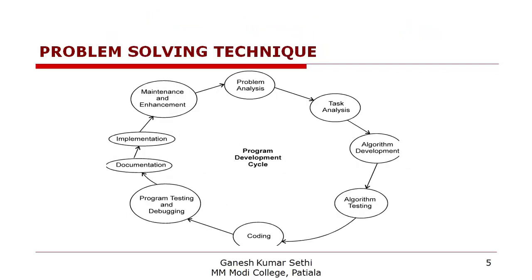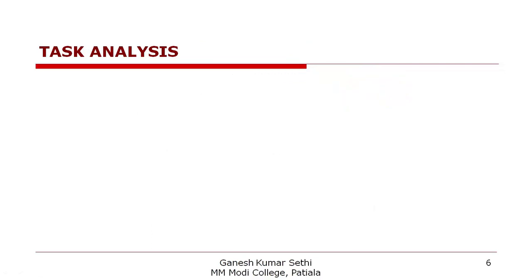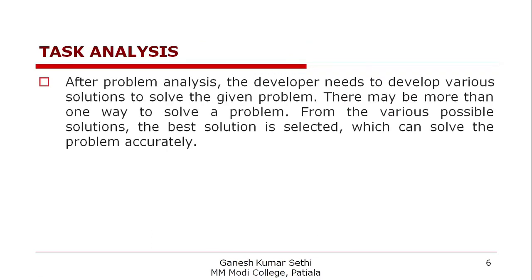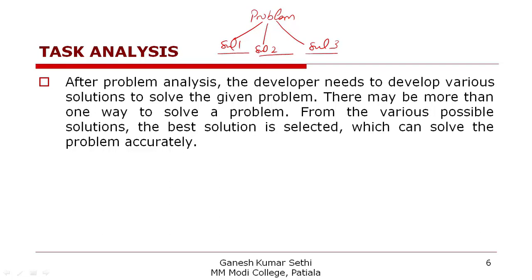Once you understand what needs to be done through problem analysis, we move on to how to do it — this is known as task analysis. In task analysis, we apply our mind and experience to figure out how to solve the problem. Sometimes there may be alternative solutions — solution one, two, three. We compare them and select the best solution. All these things are done mentally and can be noted down.